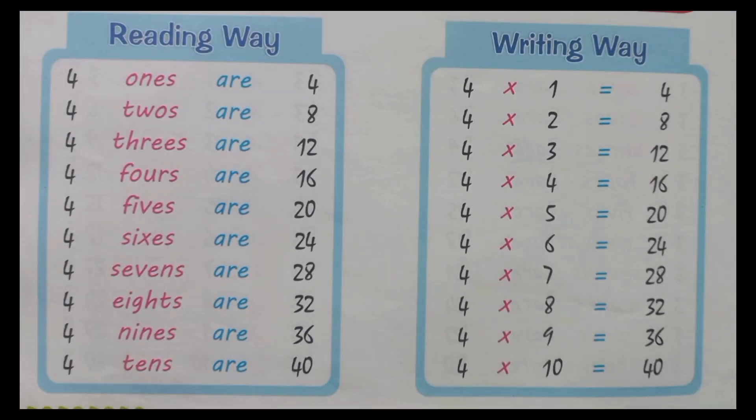Table of four. Four, one's a four. Four, two's a eight. Four, three's a twelve. Four, four's a sixteen. Four, five's a twenty.